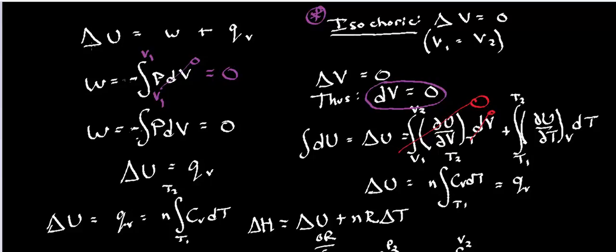However, remember, we have this first law of thermodynamics that the internal energy is equal to the work plus the heat. Well, if the work is zero for an isochoric process, then that implies that delta U has to be equal to the heat.